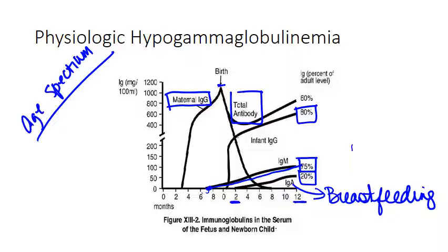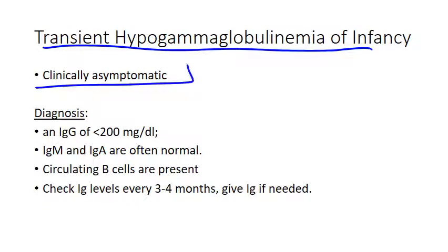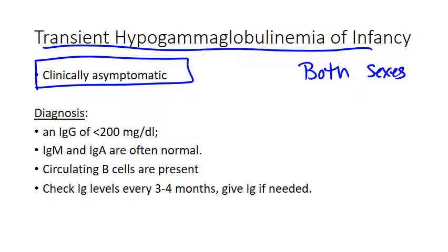Premature infants are especially prone to a more prolonged physiologic hypogammaglobulinemia because they don't have enough time to get the full complement. There is also transient hypogammaglobulinemia of infancy, which is a little bit abnormal. Clinically it's typically asymptomatic, and you'll just see that levels are all a little bit low. This can be differentiated from XLA: first, because it occurs in both sexes; second, because you do see the isotypes come up over time — you just check every three to four months. IgM and IgA are often normal, and you will see circulating B-cells, which is a good sign the patient doesn't have XLA. Basically, you just wait it out — it'll get better.